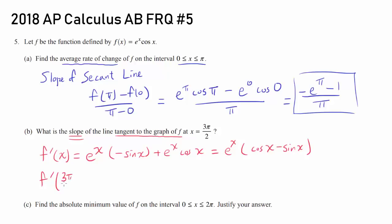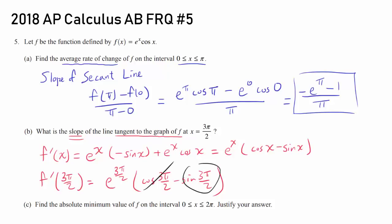f prime at 3 pi over 2 is e to the 3 pi over 2 times cosine of 3 pi over 2 minus sine of 3 pi over 2. The cosine of 3 pi over 2 is 0, so it goes away. Sine of 3 pi over 2 is negative 1, so we have negative negative 1, or positive 1. So we get e to the 3 pi over 2.